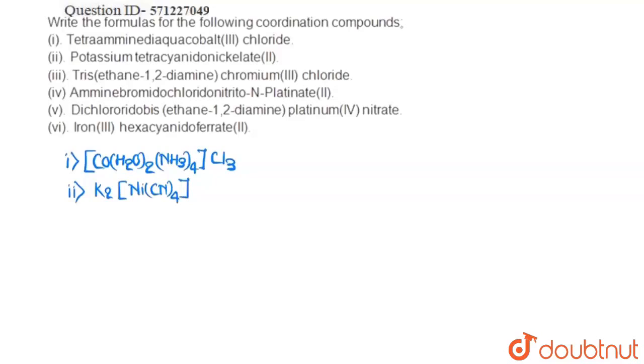For the third complex, we have tris(ethane-1,2-diamine) chromium(3) chloride. So, the formula will be [Cr(en)3]Cl3. Three ligands of ethane-1,2-diamine are there, and 3 chlorine will be present as counter-ion as chromium(3) is there.